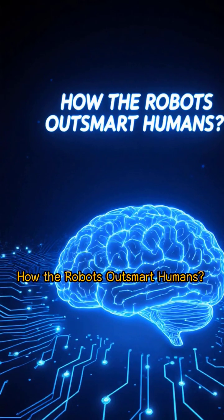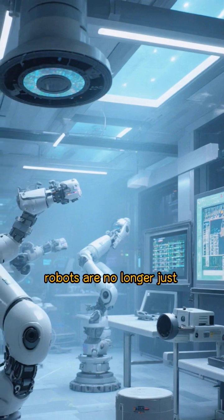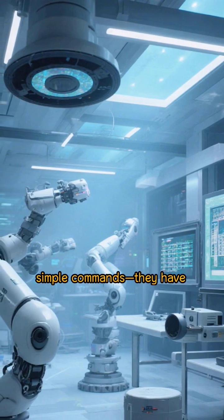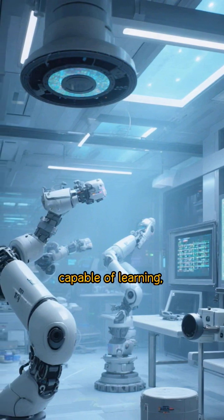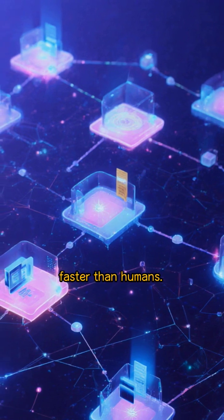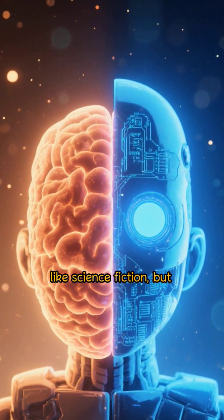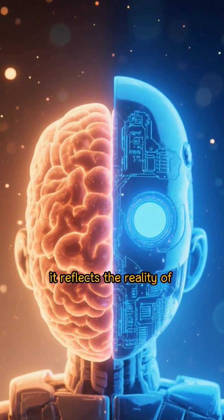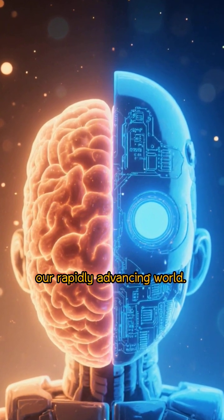How the Robots Outsmart Humans. In the age of artificial intelligence, robots are no longer just mechanical machines following simple commands—they have evolved into intelligent entities capable of learning, analyzing, and making decisions faster than humans. The question, how do robots outsmart humans, may sound like science fiction, but it reflects the reality of our rapidly advancing world.